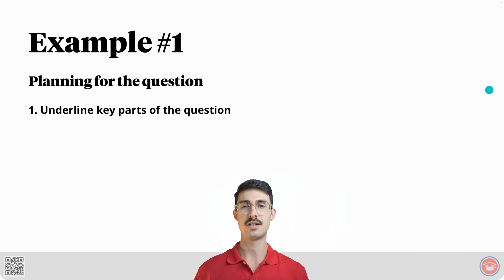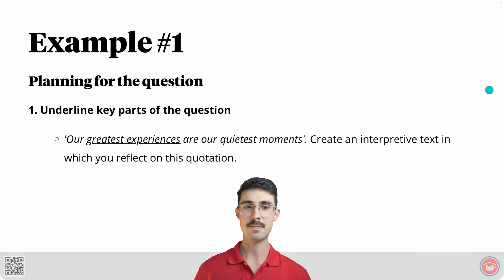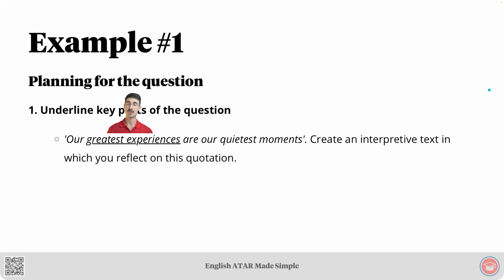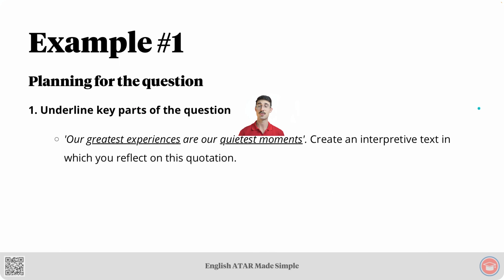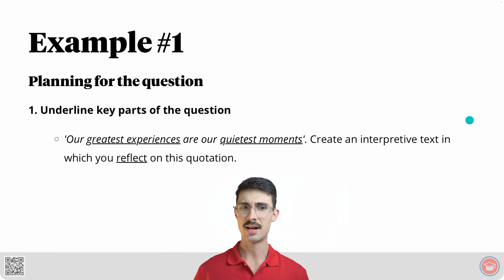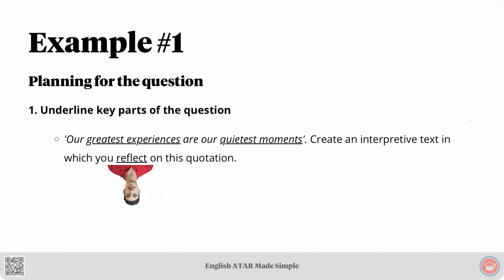Step one: underline key parts of the question. First key part: the words 'greatest experiences.' Second key part: the words 'quietest moments.' Final key part: the word 'reflect.'